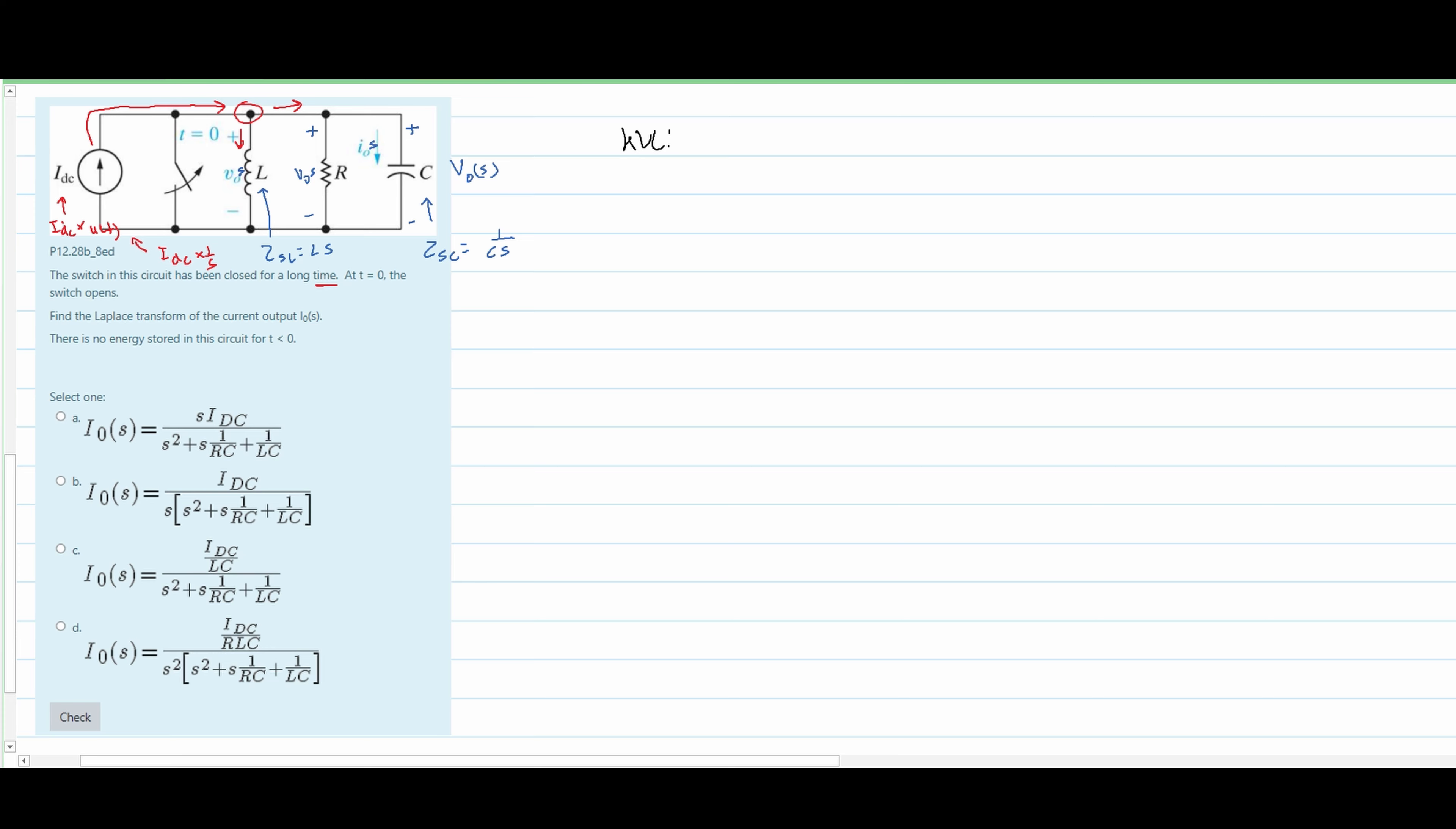So first thing that we are going to have, current going into the node, we'll have negative IDC over s. Then we are going to have a plus. We know we have our V0 over our Ls, we also have resistance underneath our V0, and lastly with the capacitance we have V0 over 1/(sC). Make sure you include the s with all of these V0s as well. So this will all be set equal to 0.